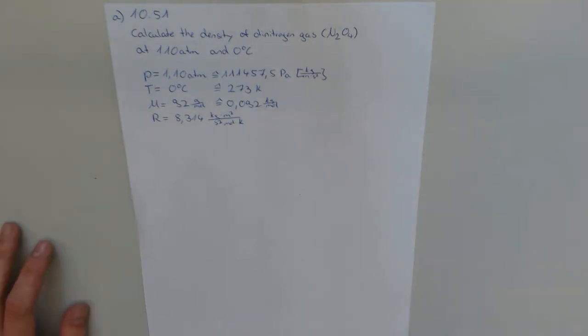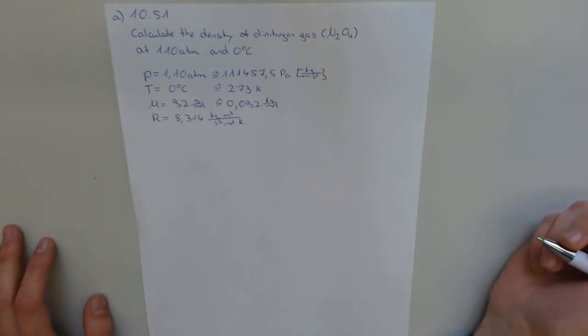Welcome to the class, Physical Chemistry. My task is to calculate the density of dinitrogen gas at 1.1 atm and 0 degrees Celsius.